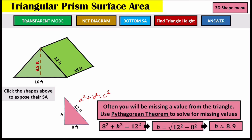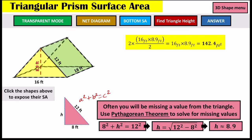Now we have our missing pieces and can find the surface area of the triangles. Remember there's a front and a back side, so we have two sets of base times height divided by 2. That gives us 16 times 8.9 divided by 2 — the twos cancel out, leaving us 16 times 8.9, which is 142.4 feet squared.